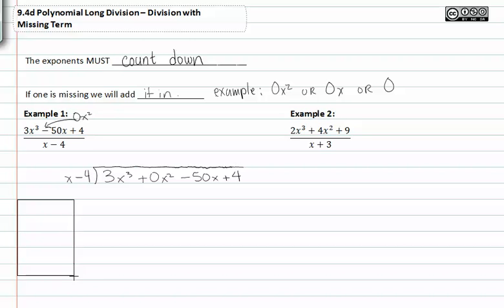We'll give ourselves some scratch paper. We're going to need to take three x to the third, the first term in the dividend, and divide it by the first term of the divisor which is x. This reduces to three x squared. We'll put that in the quotient.